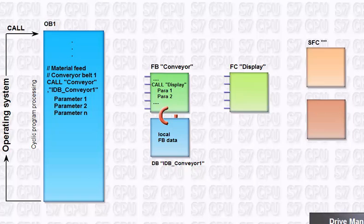System functions, or SFCs, are parameterizable functions integrated in the operating system of the CPU whose number and functionality are fixed. In this example, the current system time can be read from the operating system of the CPU via an SFC.